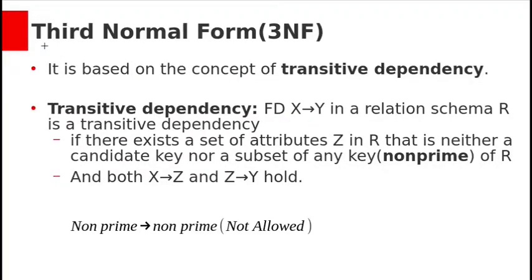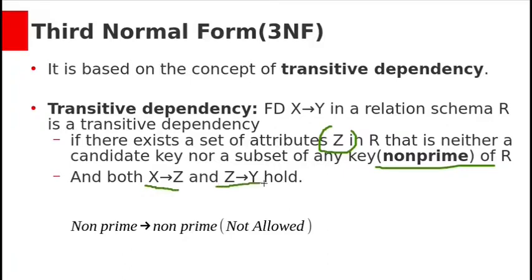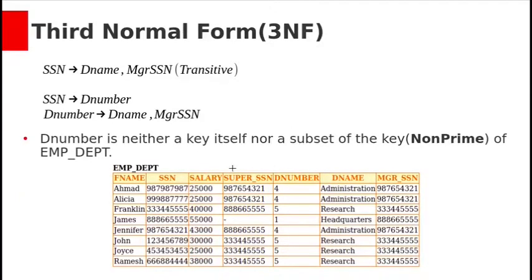We have already seen second normal form, which is based on partial functional dependency. Third normal form is based on transitive dependency. A transitive dependency in a relation schema R exists if there is a set of attributes Z that is non-prime, and both X derives Z and Z derives Y are valid functional dependencies in R, meaning X can derive Y based on the transitive rule.